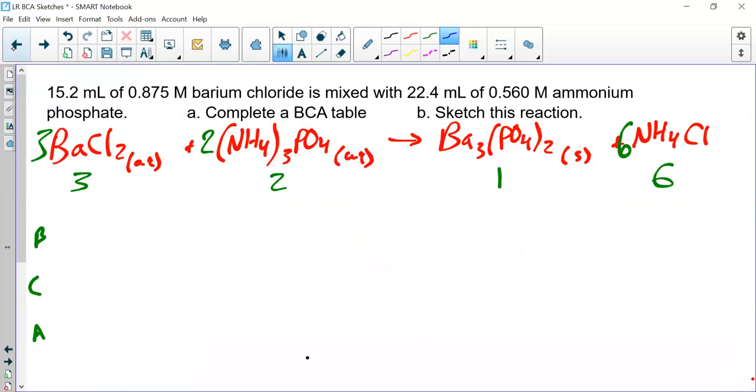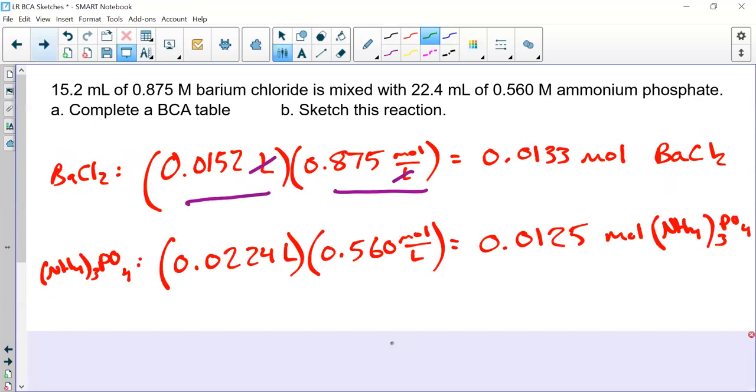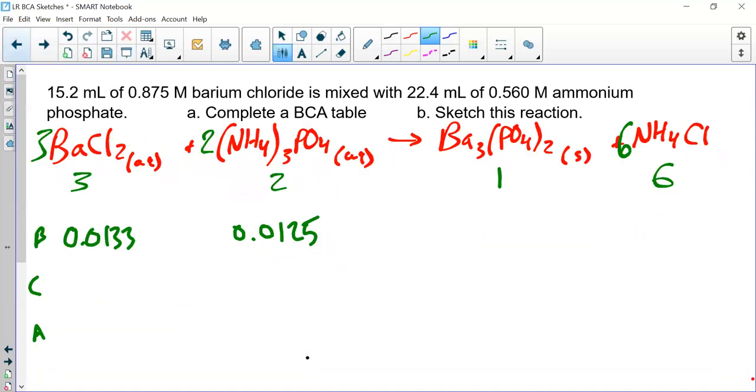0.0133 and 0.0125. Now you're back in familiar territory. It's just like a normal stoichiometry problem. The only difference is instead of giving you grams, we give you molarity and volume, and you find moles that way. We have none of the products. What do we do now? Find the limiting reactant. 0.0125 divided by two equals 0.00625. Then 0.0133 divided by three equals 0.00443. What's smaller? 0.004, which makes this my LR limiting reactant and this my ER excess reactant.